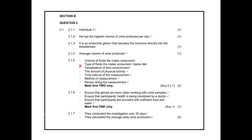The other variables in the memo are very specific and you must really know your work well to remember them. For the precaution: gloves — wear gloves. The other precaution options include: participants' health is monitored by a doctor, and participants are provided with sufficient water and food — that's less likely for you to remember, but remember gloves and masks. For reliability: investigation done over 30 days, and they calculated the average daily urine production.